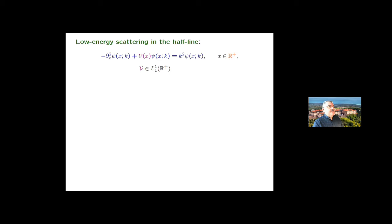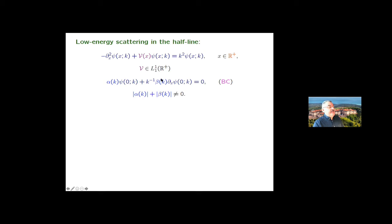For the half line, x runs from zero to positive infinity. I have the Schrödinger equation with a potential from the same class. The scattering problem becomes well defined with a boundary condition at x equal to zero — this is a very general Robin type boundary condition where alpha and beta are not both zero. If beta equals zero, you have the Dirichlet boundary condition. For alpha equals zero, you have the Neumann boundary condition. I have also made alpha and beta k-dependent, which makes this very general.